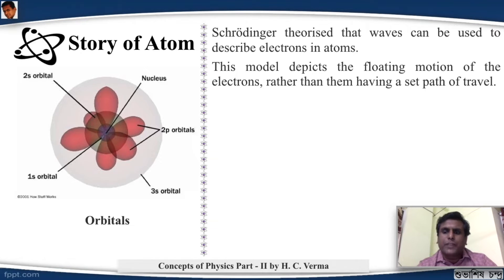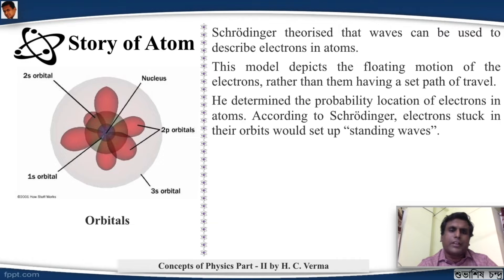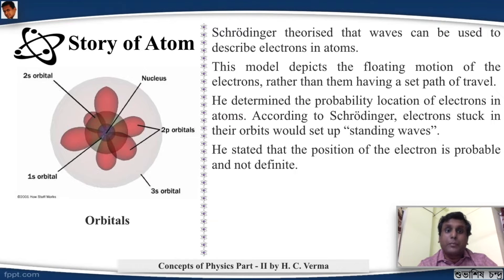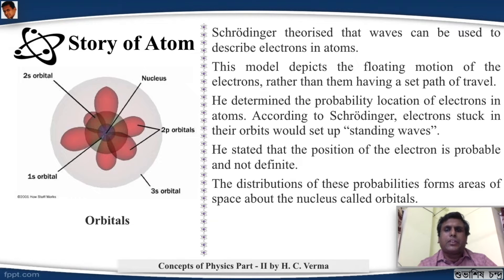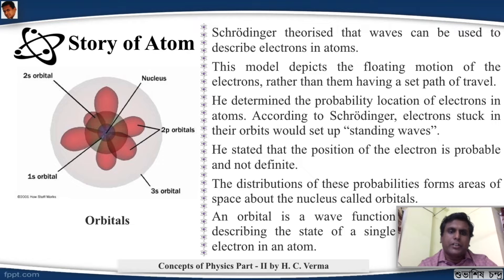He determined the probability location of electrons in atoms. According to Schrödinger, electrons stuck in their orbits would set up standing waves. He stated that the position of the electron is probable and not definite. So we were moving from the fixed stationary orbits to orbits which are probable but not definite. That is the orbit cannot be defined in a rigid way. The distributions of these probabilities will form areas of space above the nucleus and these spaces were called the orbitals. Some of the orbitals are shown in the figure. So an orbital is basically a wave function describing the state of a single electron in an atom.